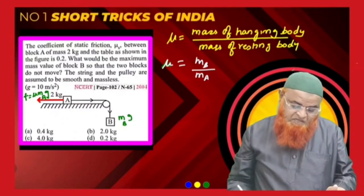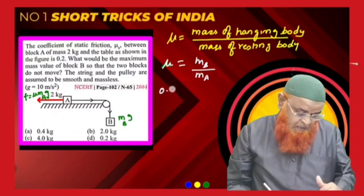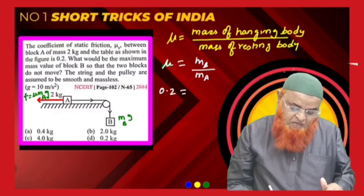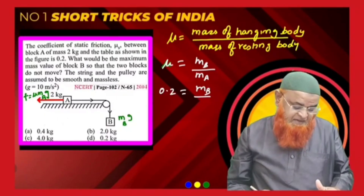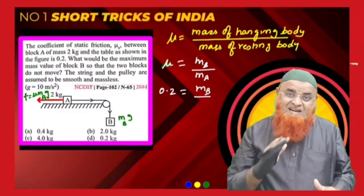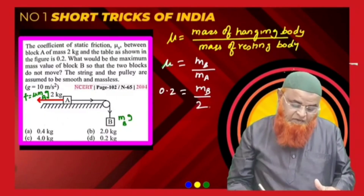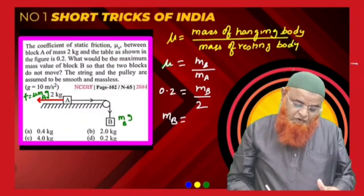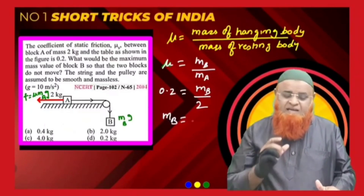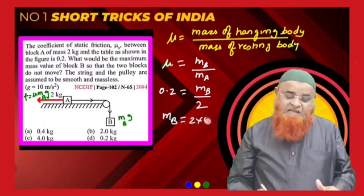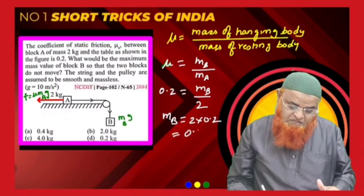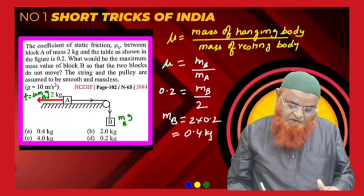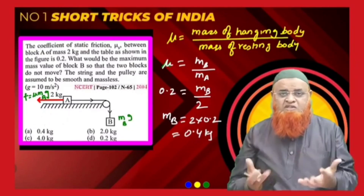In this problem, mu is given as 0.2 and the mass of the body resting on the table is 2 kg. We have to find the mass of the hanging body B. Therefore, mass of the hanging body is 2 into 0.2, which is 0.4 kg.